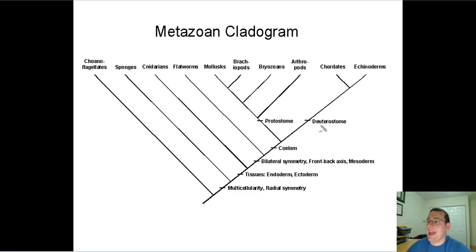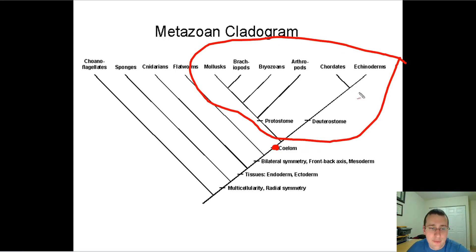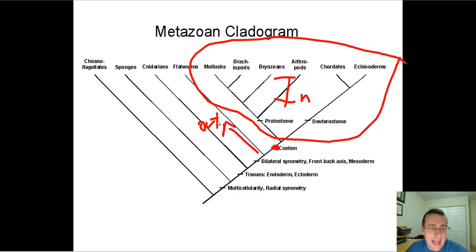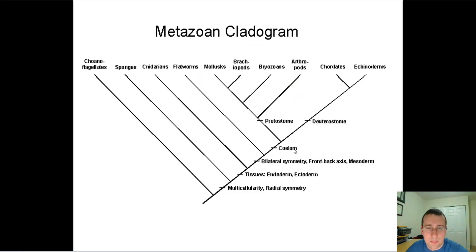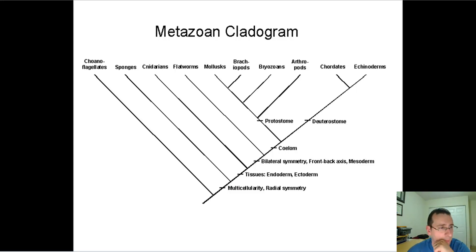The key point is that everybody past a particular branching point will share that derived character. We call this group a clade. Everybody not part of this in-group is called an out-group. For example, flatworms are an out-group of the coelomates, and everybody inside is considered part of the in-group — it's kind of like a clique in high school. So in terms of multicellularity, the choanoflagellate is an out-group while everybody else is the in-group. That's how you create the clades discussed in cladistics — basically the same idea as a taxon in phylogenetics.